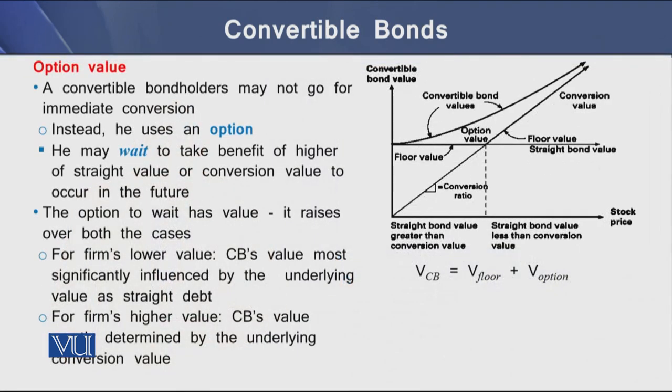The third component of the value of a convertible bond is called the option value. A convertible bond holder generally may not go for immediate conversion; instead, he can use an option and wait to take benefit of the higher of the straight value or conversion value occurring in the future.